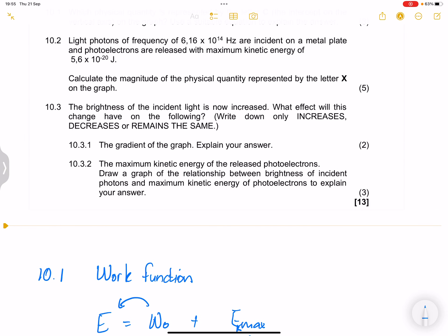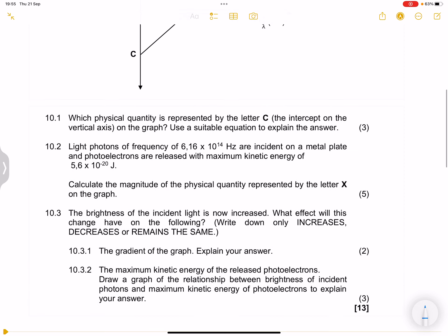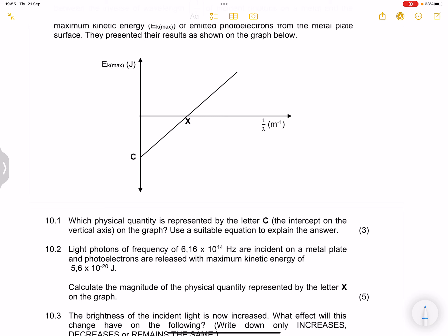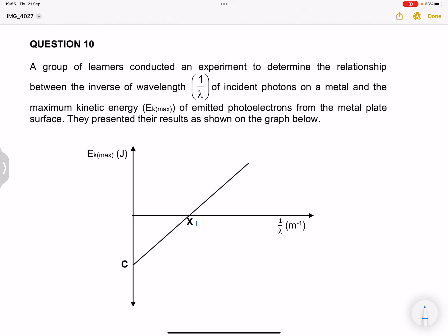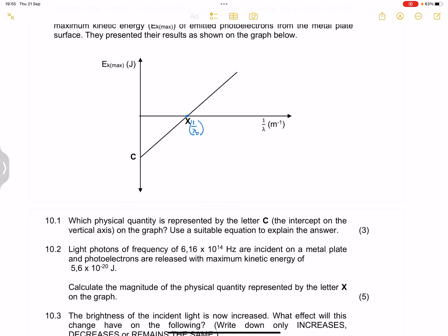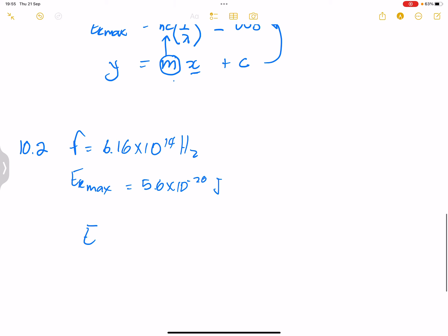They wanted us to calculate the magnitude of the physical quantity represented by the letter X on the graph. Now, the letter X on the graph represents, in this case, remember, this is 1 over the wavelength. But remember, on a normal basis, this would be the threshold frequency over here. But what are we looking for? The inverse of the wavelength of the threshold frequency. So let's use our equation. E is equal to ω₀ plus EK max. So we know that E equals HF, that's ω₀. So I'm going to write this as HF₀ plus EK max.